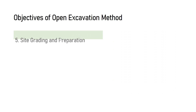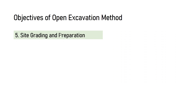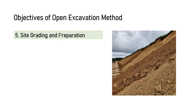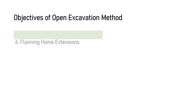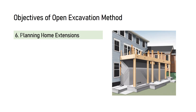The fifth objective is site grading and preparation — to identify areas of varying soil conditions, such as hard soil or soft soil, that may require adjustments such as trimming, ramming, or leveling. The sixth objective is planning home extensions — to provide crucial information about the ground conditions as well as the foundation depth and strength for an existing building, so that we can determine whether it is safe to add an extension to the current building.